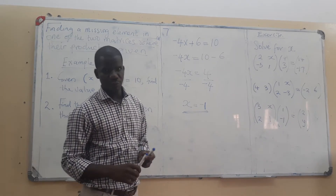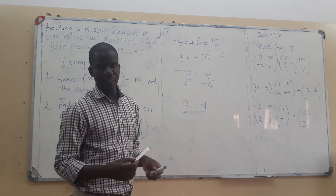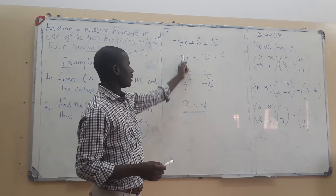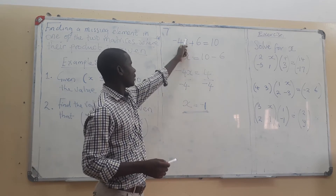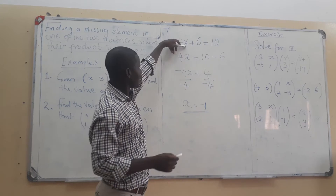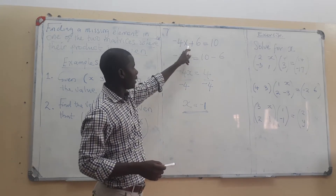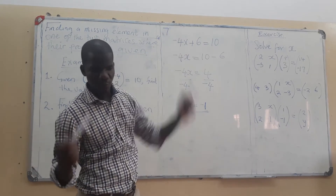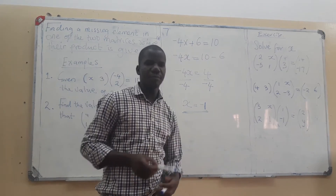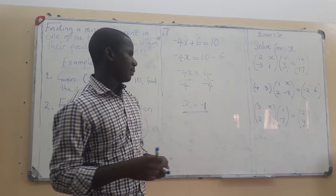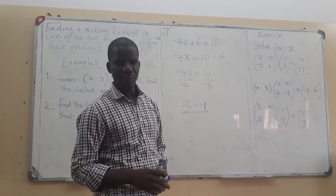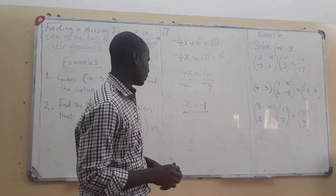To prove that x equals negative 1 is correct, we can replace x with negative 1 and check if we get 10. So 4 multiplied by negative 1 gives us positive 4 — wait, that gives us negative 4, and negative 4 added to 6 gives us 10. That confirms our answer is correct.